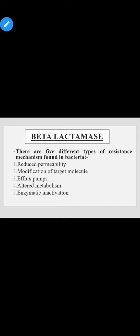Bacteria میں different types کے resistance mechanisms پائی جاتے ہیں۔ There are five different types of resistance mechanisms found in bacteria. پہلا ہے reduce permeability۔ Reduce permeability میں کیا ہوتا ہے کہ antibiotic کی diffusion کو، کہ وہ cell میں enter ہو سکے، bacteria reduce کر دیتا ہے۔ جب antibiotic cell کے اندر enter ہی نہیں ہو سکے گی تو وہ اپنا action کیسے perform کرے گی — یعنی antibiotic resistant ہو جائے گی۔ Reduce the diffusion of antibiotic entering the cell.